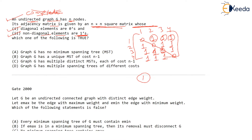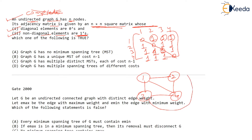For example, if you draw this graph with vertices one, two, three, four — four vertices — then the weight between every vertex is one. That's what the adjacency matrix means.